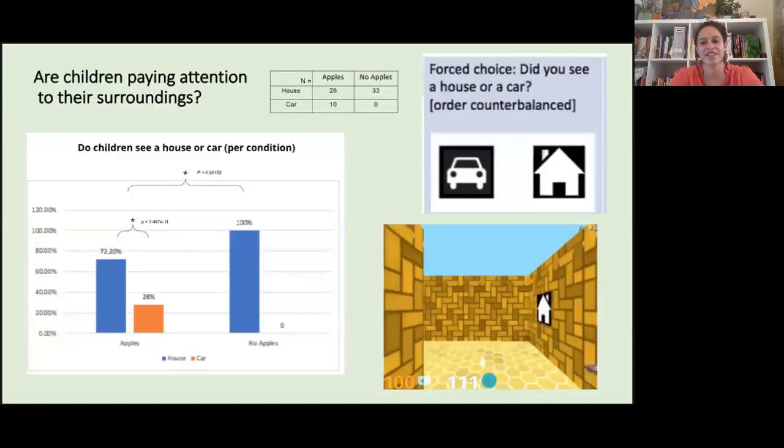We were also curious to see if between these two conditions, children are paying attention to their surroundings. So we placed an image on the wall, which you can see as this little house near the goal. And after they completed the first maze, we gave them a forced choice to see if they noticed the correct image. What we find is that in the dense rewards condition, children notice it 72% of the time, whereas in the sparse rewards condition, they noticed it 100% of the time. The difference between these conditions is significant, meaning that when the children are freely exploring versus focused on finding a goal, they are noticing their surroundings more.